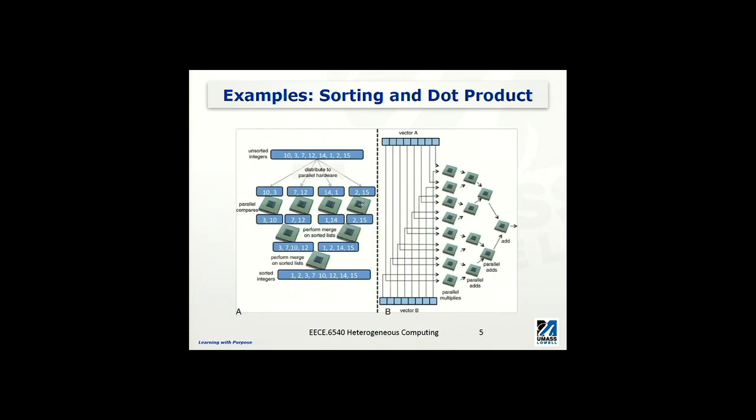And their result will be given to the next set of processors to do so-called merge sort. So once we have 3, 10 as a group, and 7, 12 as a group, within each problem these two numbers are sorted. And now we're going to do a merge sort to combine these two groups into this 3, 7, 10, 12 sequence. And so on, we're going to perform another level of merge, and eventually we have a sorted integer.